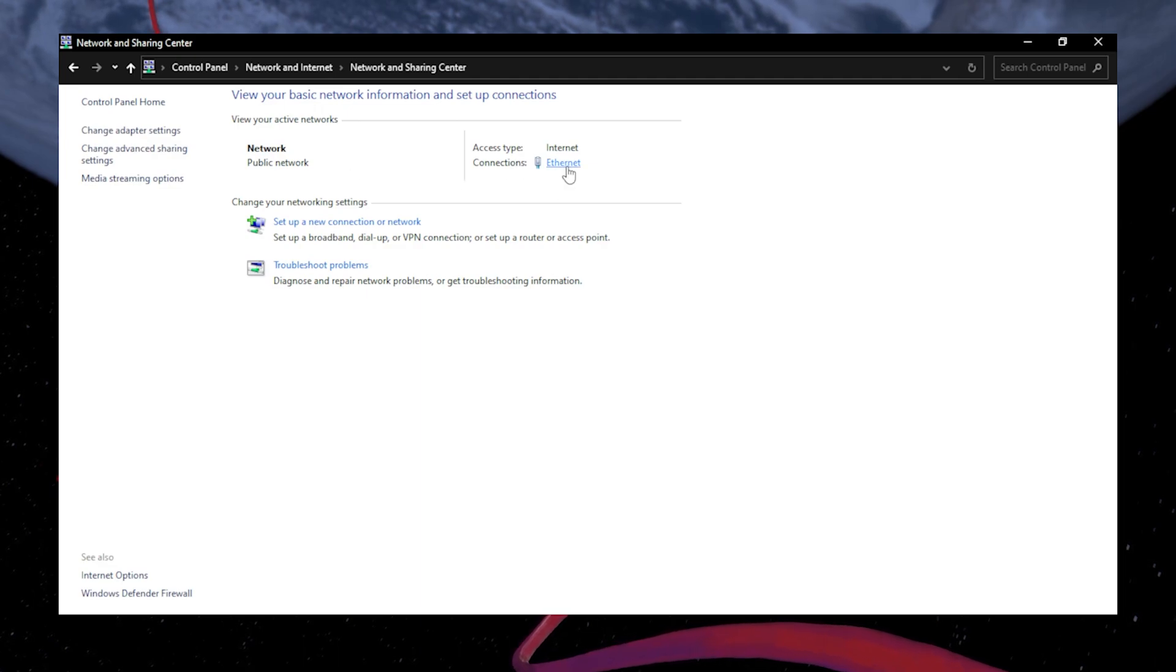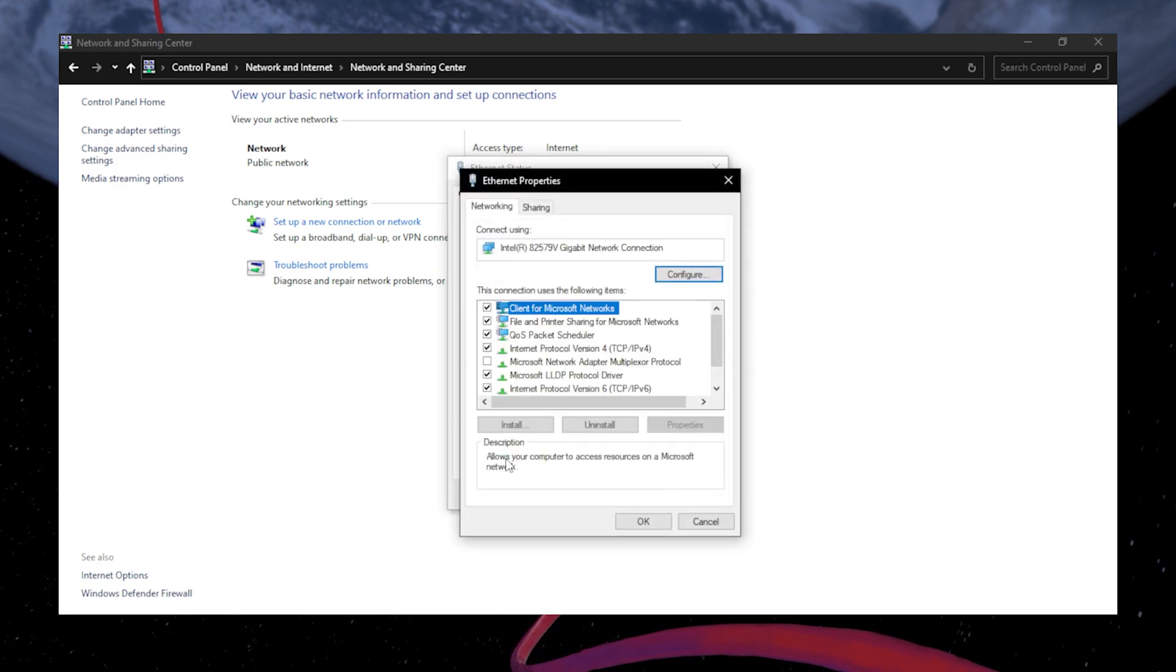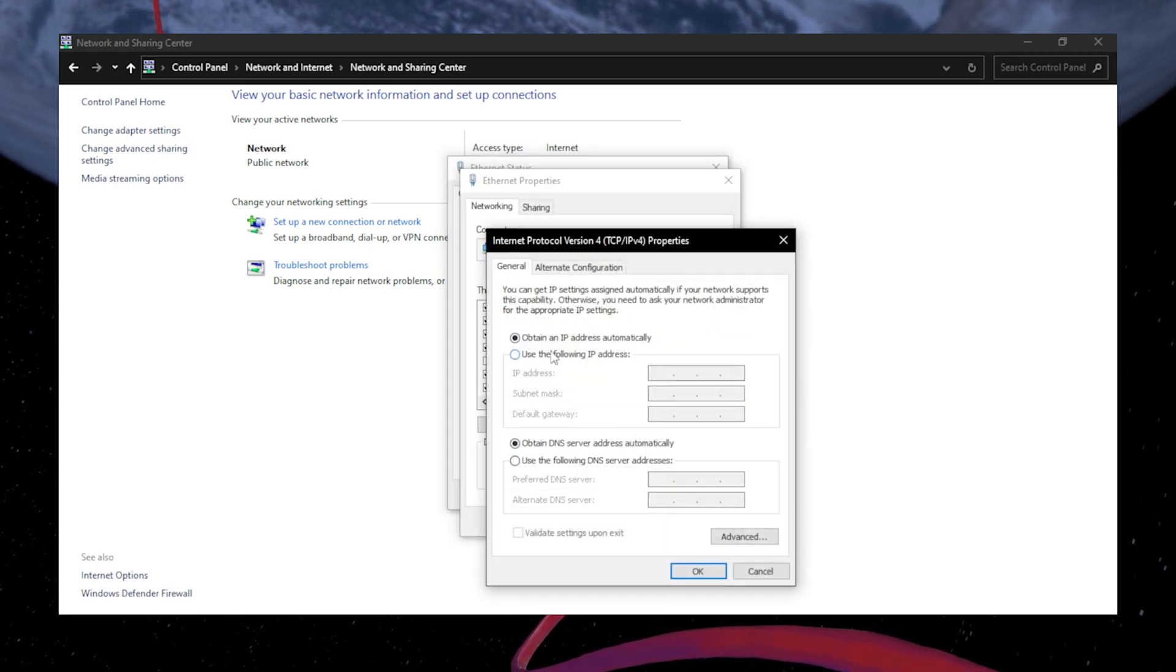To define the DNS address, select your current connection, such as Wi-Fi or Ethernet. Next, select Properties from the pop-up window. Double-click Internet Protocol version 4.